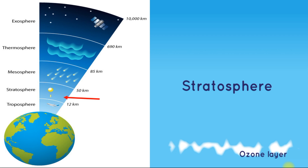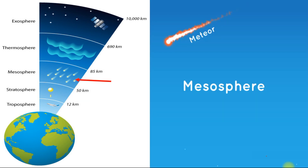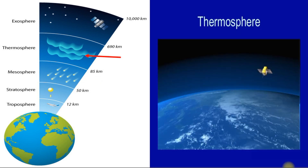The second layer is the stratosphere, where the ozone layer is present. This layer protects us from harmful rays from the sun. The third layer is the mesosphere — asteroids and meteors burn up in this layer before they reach Earth's surface, making it very important for Earth's protection. The fourth layer is the thermosphere, which is very hot because it absorbs the sun's radiation.